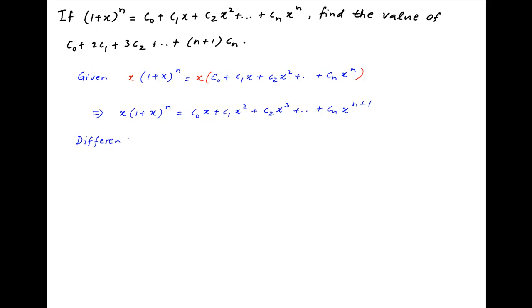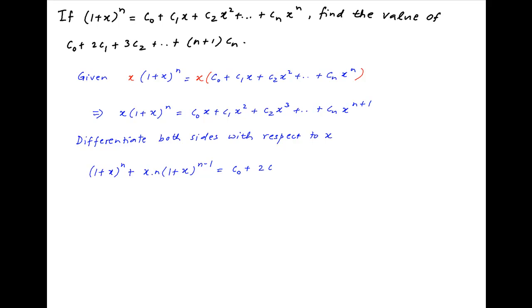Now differentiate both sides with respect to x. On the left hand side we get (1 + x)^n plus x times n times (1 + x)^(n-1). This is equal to C0 plus 2C1·x plus 3C2·x² plus and so on, plus (n+1)·Cn·x^n on the right hand side.